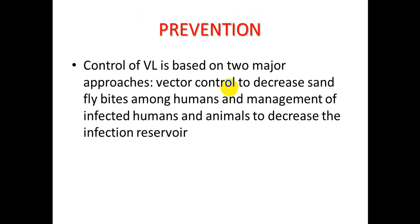Prevention and control of visceral leishmaniasis is based on two major approaches: vector control — targeting the sandfly to decrease bites among humans — and management of affected humans and animals to decrease the infection reservoir. With this, we end our lecture. I hope you enjoyed it and I am ready to answer any questions. Thank you very much.